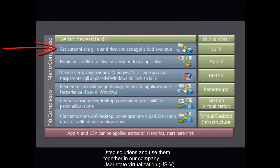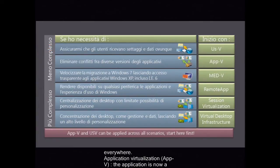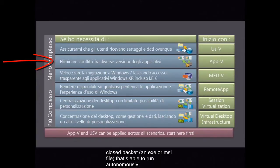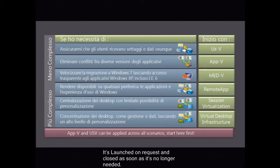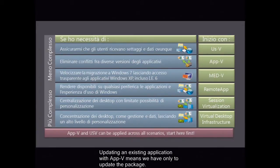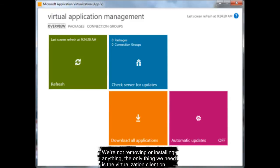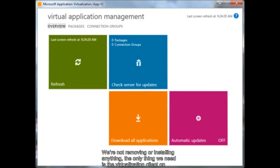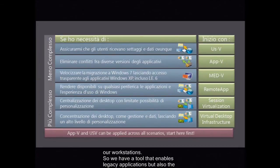User state virtualization: we want our users to be able to receive their settings, profile, data, and so on, everywhere. Application virtualization: the application is now a closed packet — an .exe or .msi file — that's able to run autonomously. It's launched on request and closed as soon as it's no longer needed. The footprint on our operating system is zero because we are not installing anything. Updating an existing application with AppV means we only have to update the package — we're not removing or installing anything. The only thing we need is the virtualization client on our workstations. So we have a tool that enables legacy applications but also the fast deployment of new software.